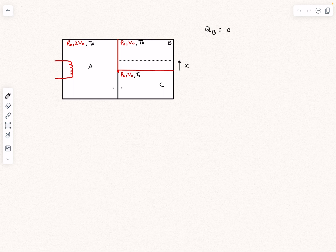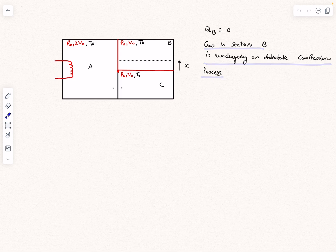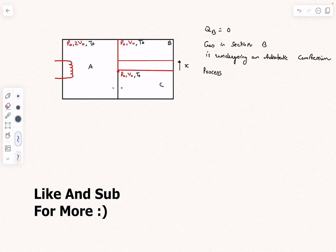No heat transfer will happen to and from section B, which essentially means the gas in section B is undergoing an adiabatic compression process. When equilibrium is achieved, the piston will be here.